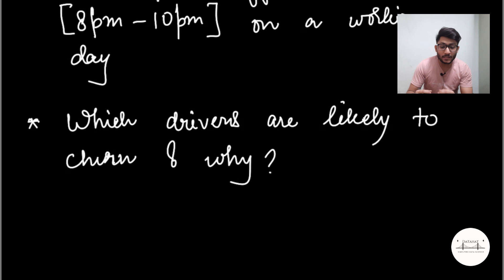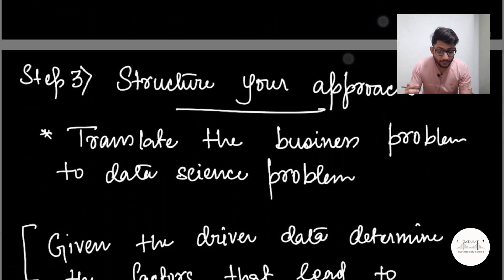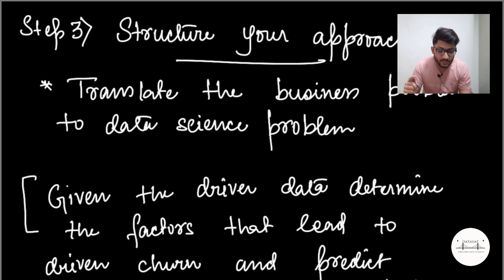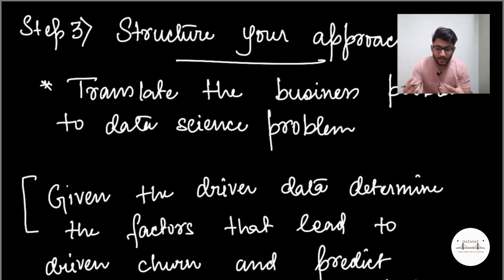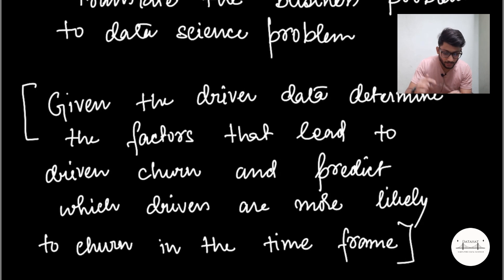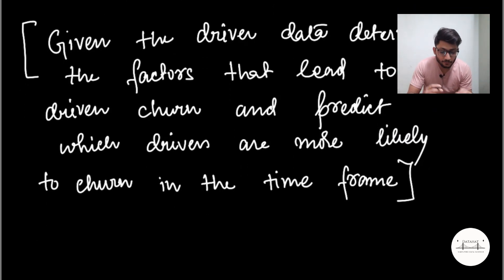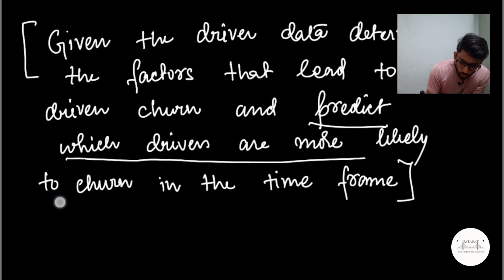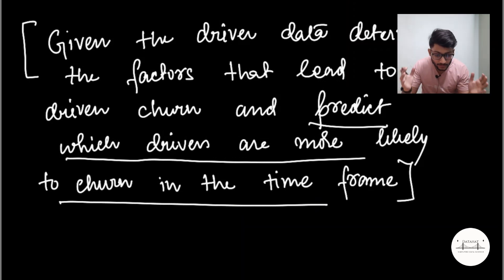After asking your clarifying questions, the third step is to structure your approach. Now that you understand the business problem and have asked clarifying questions, it's time to convert the business problem into a data science problem. Given the driver data, determine the factors that lead to driver churn and predict which drivers are more likely to churn in the timeframe. We are proposing a classification solution and predicting the likelihood of churn for any driver.